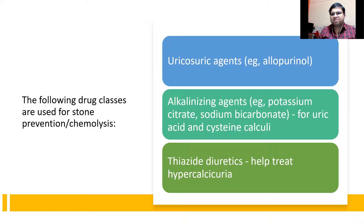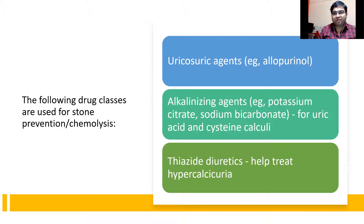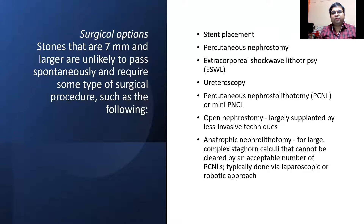There is a balance between promoters and inhibitors of stone formation. Citrate is an important inhibitor of stone formation — citrus foods and lemon juices are beneficial because they are rich in citrate and prevent stone formation. Oxalates, found in foods like cucumbers, are promoters of stone formation and are harmful in excess. Maintaining the balance between these two determines whether stones form.